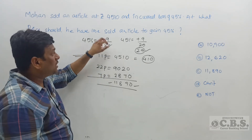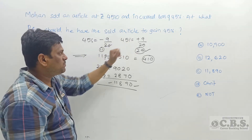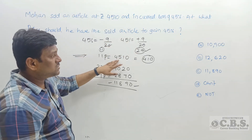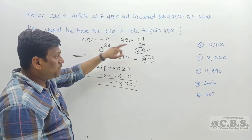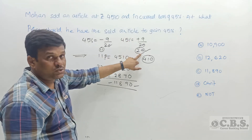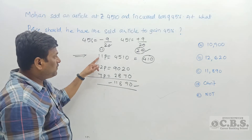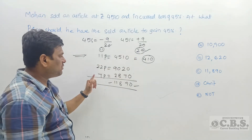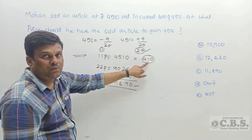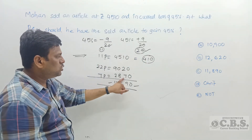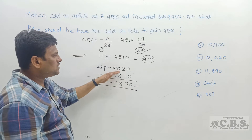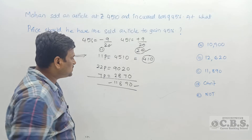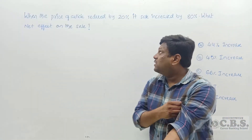To summarize question 3: 45% means 9 by 20. Loss gives selling price 11 parts = 4,510. Profit gives new selling price 29 parts. 11 doubled is 22, needing 7 more parts. One part = 410 rupees. Seven parts = 2,870. Total: 9,020 + 2,870 = 11,890 rupees is the final answer. Option A is correct.